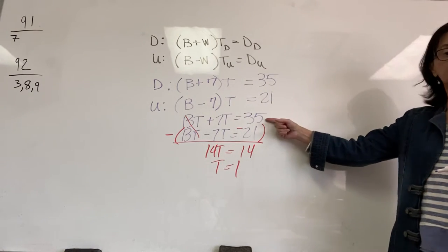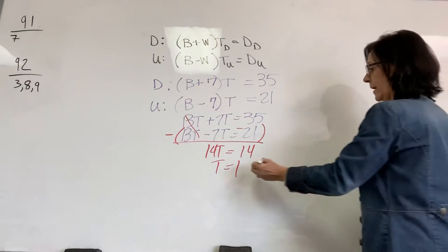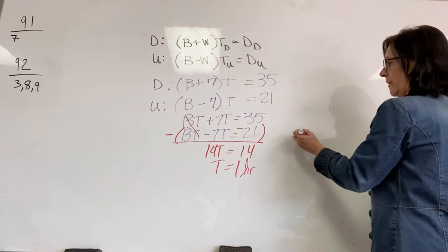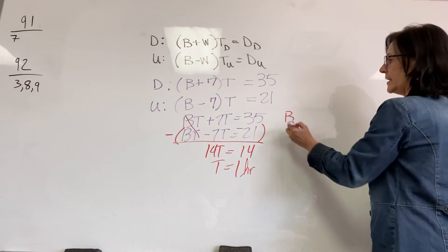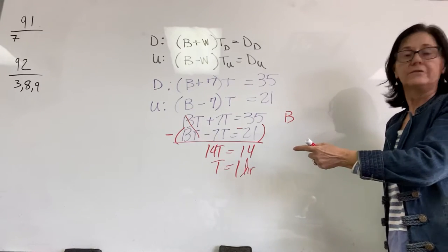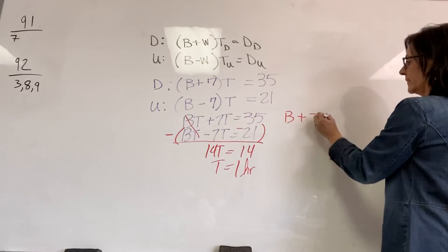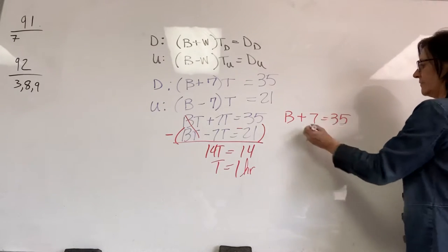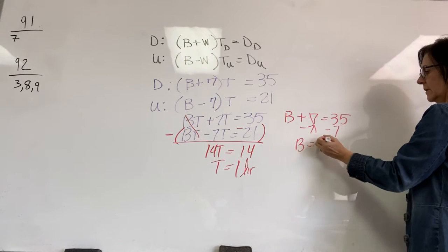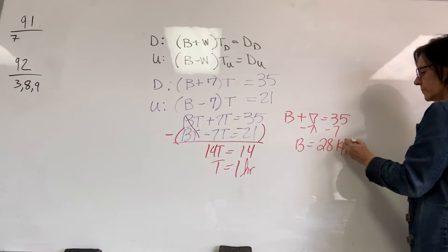I'll just go back and plug it into this equation and solve for the speed of the boat. So they're going 1 hour. Because it was kilometers per hour, right? So the B, the speed of the boat, times 1. I'm not going to write 1. We don't have to. Plus 7 times 1 equals 35. Subtract 7. What was the speed of the boat? 28 kilometers per hour.